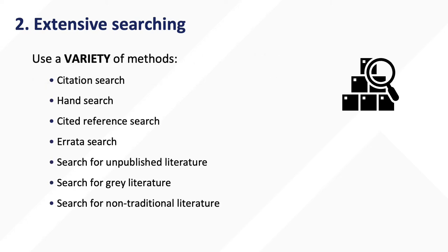A variety of search methods will be used, including citation searches, hand searches, cited reference searches, and errata searches. You will also need to search for unpublished, gray, and nontraditional research literature.